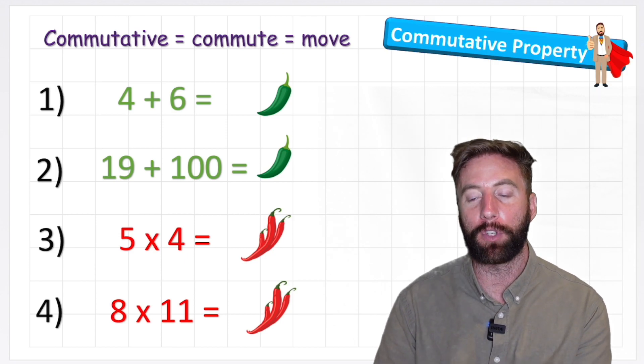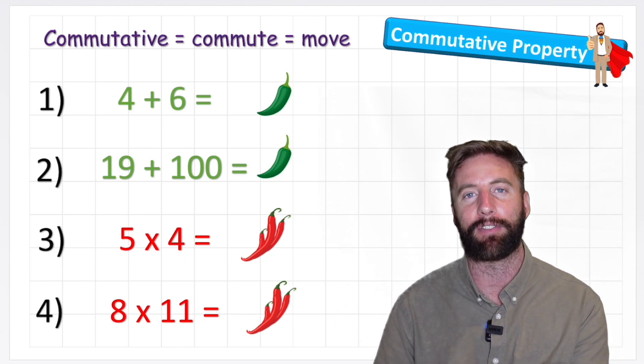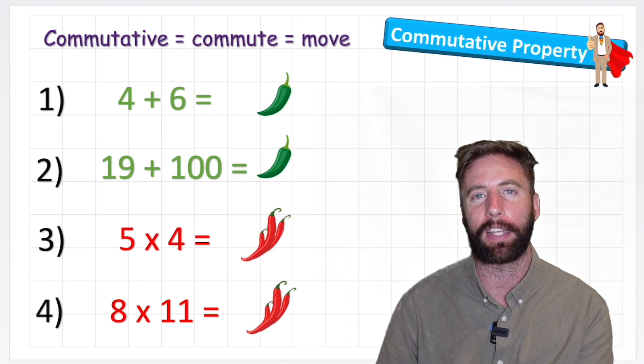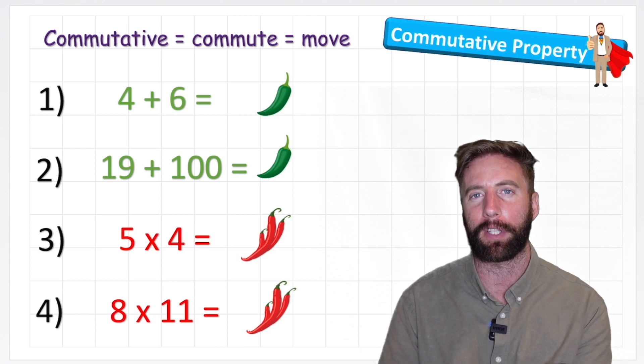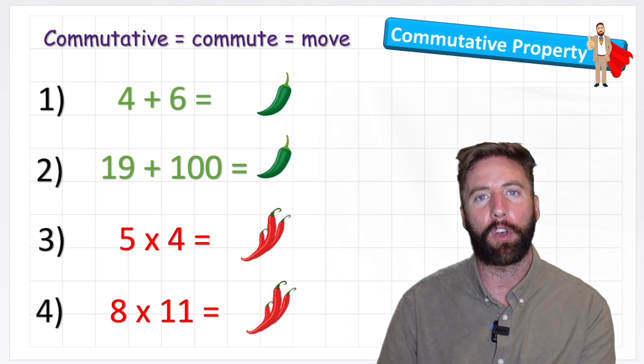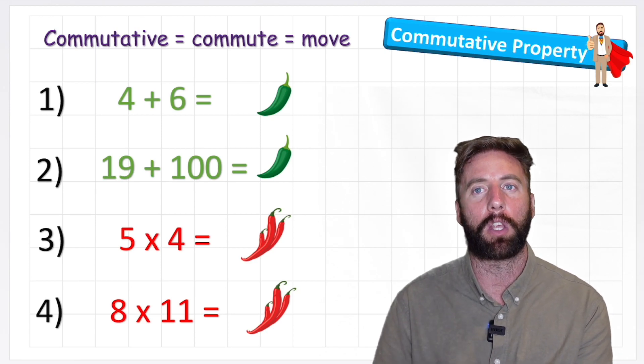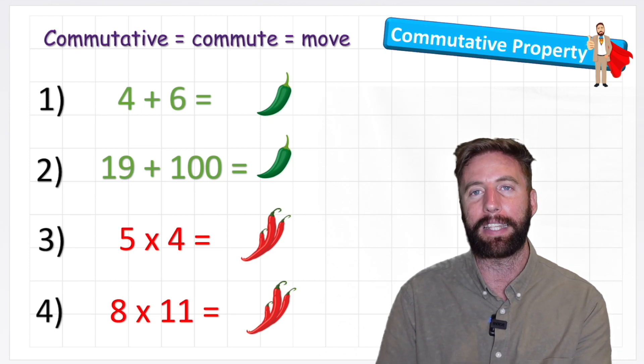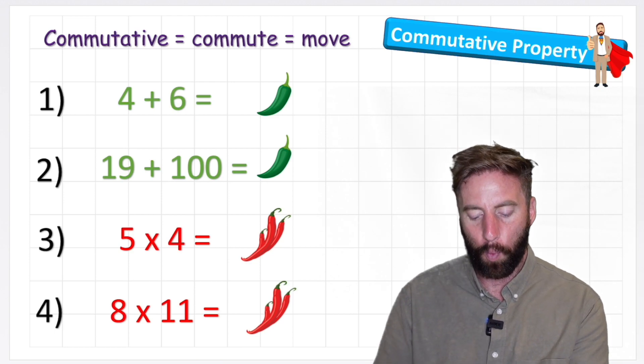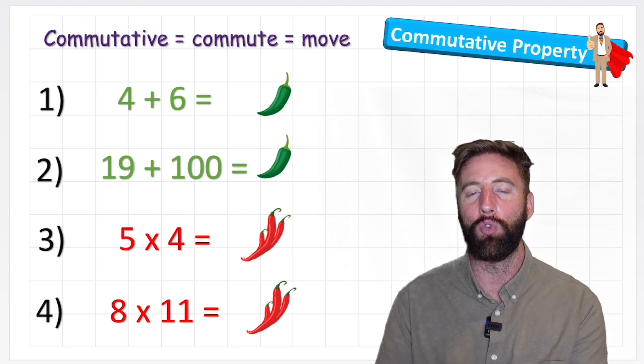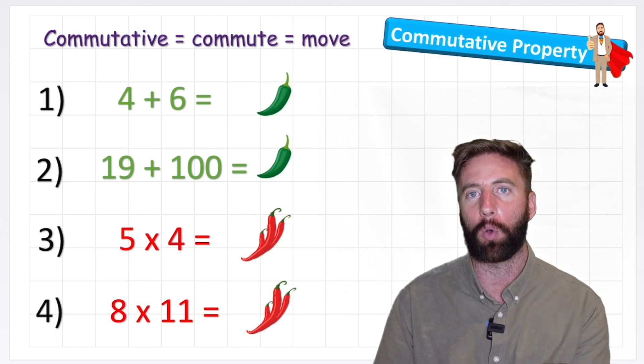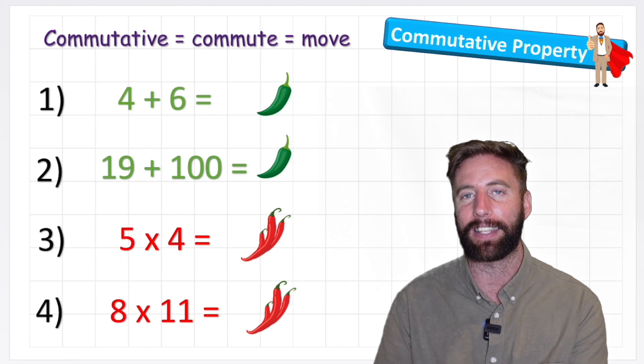Okay, we're going to be looking at what the commutative property is and these four example questions to see how this property applies. First of all, think of the word commutative like commute, which basically means to move. What it's saying is that we can move our numbers in our questions and still get the same answer.